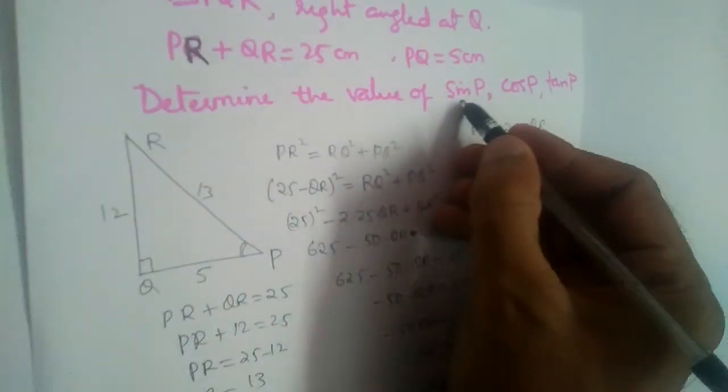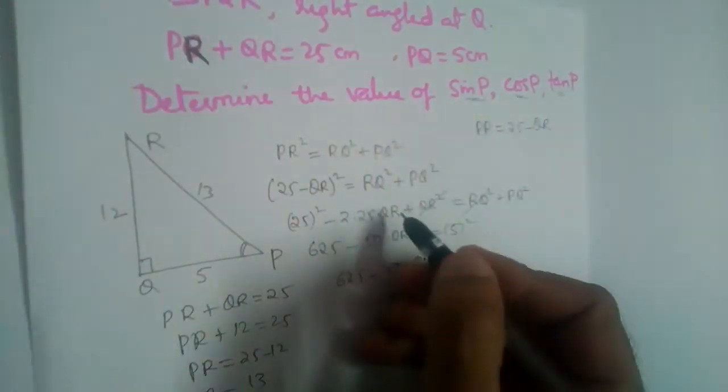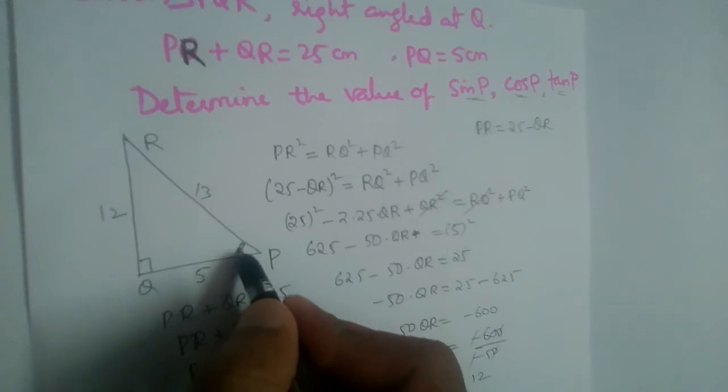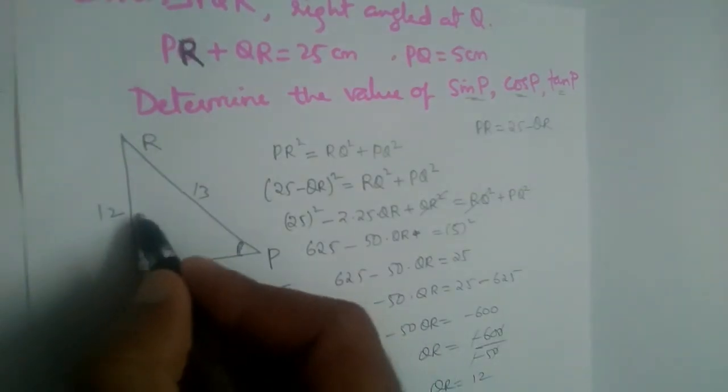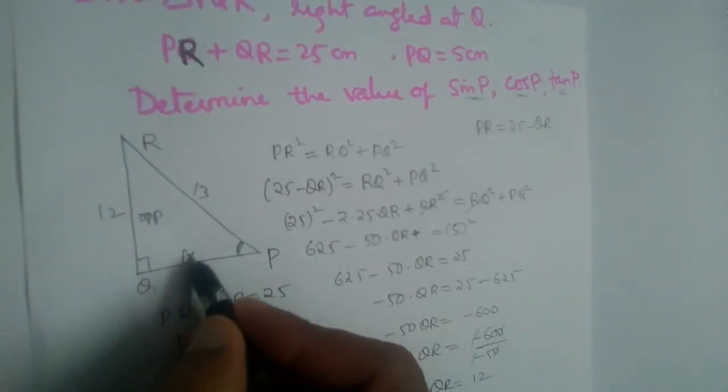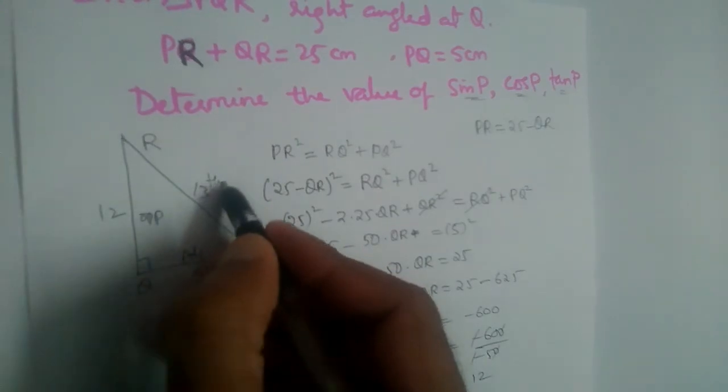Now we need to find sin P, cos P and tan P. So angle P is here. To angle P, what is the opposite side? 12. What is adjacent? 5. What is hypotenuse? 13.